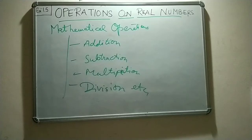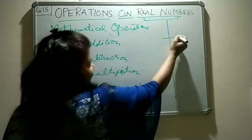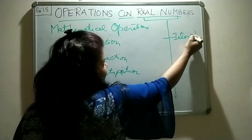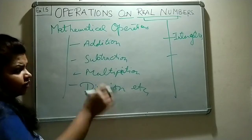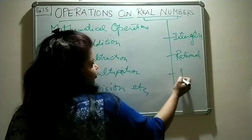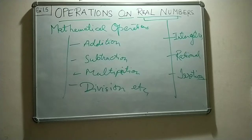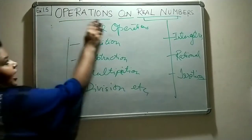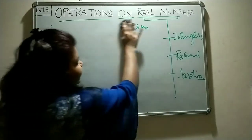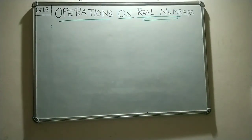Till now we have learned about real numbers. Real numbers include integers, whole numbers, natural numbers, rational numbers, and irrational numbers. In your previous classes you have learned about rational numbers. So let's quickly recall those properties of rational numbers which you have already studied, because until and unless you are used to them, you will not be able to solve this exercise or the next exercise.